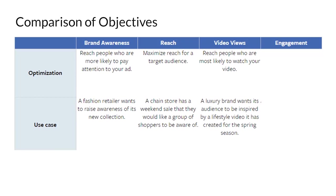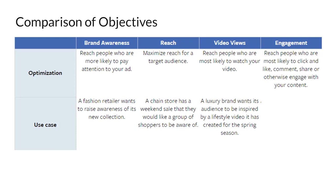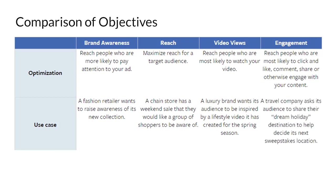When it comes to video views, you want to reach people who are most likely to watch your video. For example, a luxury brand — a watch or a car — wants their audience to be inspired by a great lifestyle video they've created. When it comes to engagement, you want to reach people who are more likely to click, like, comment, or share — essentially engage with your ad. For instance, a travel company wants its audience to share their dream holiday destination, generating crowdsourced content.